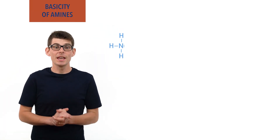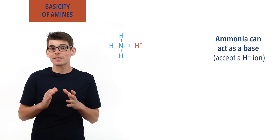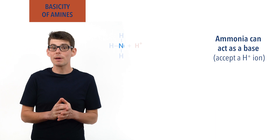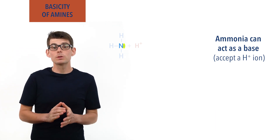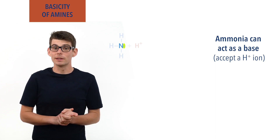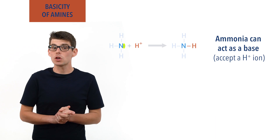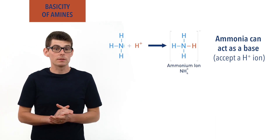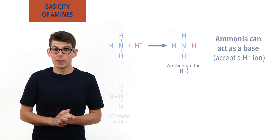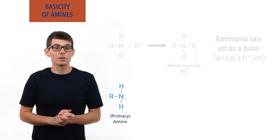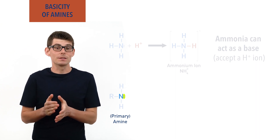Ammonia, NH3, is able to act as a base and accept a H+ ion, as it has a nitrogen atom with a lone pair of electrons. The lone pair of electrons can be used to form a coordinate, dative covalent bond with a H+ ion, forming a positively charged ammonium ion, NH4+. As amines are derivatives of ammonia, they also have a nitrogen atom with a lone pair of electrons, meaning they also can act as bases.